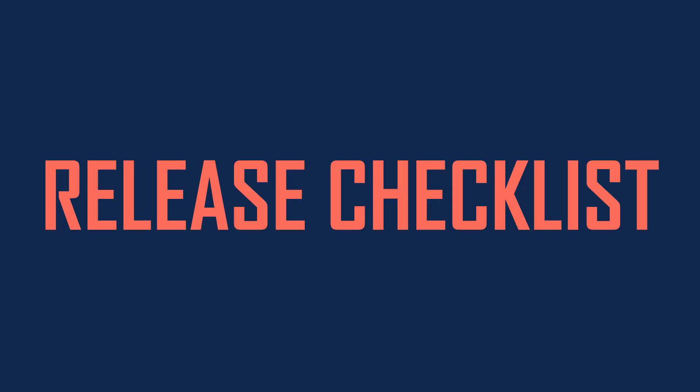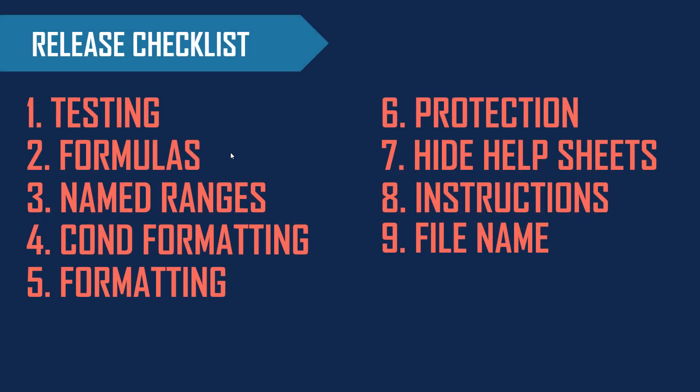Before publishing or delivering our Excel template to end users, you should perform a few steps of validation or checks. These steps are very important to make sure that our final product is of the best quality possible and is free of any errors. In this video, we will be talking about a list of nine different things that will be in our release checklist. Now let's look at them one by one.